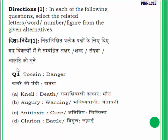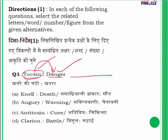Question number 1: Toxin : Danger. We have to tell what comes next with a similar relationship. Toxin is a warning bell — it is a signal for danger. In the given options, Clarion : Battle. Clarion is a trumpet that is blown when battle starts — it is a warning bell for battle. So option D is the correct answer.